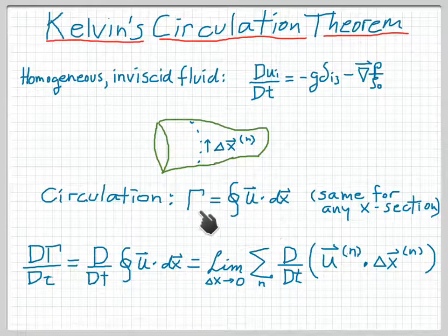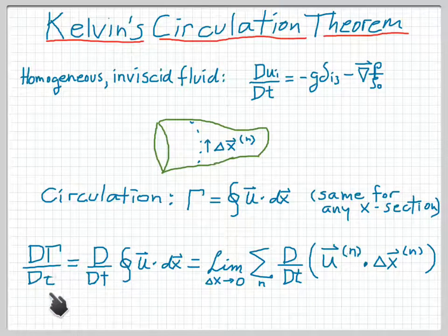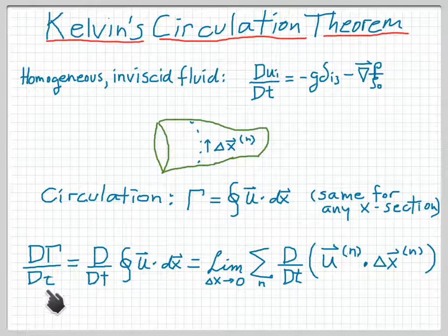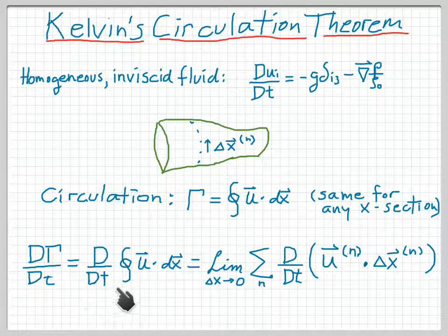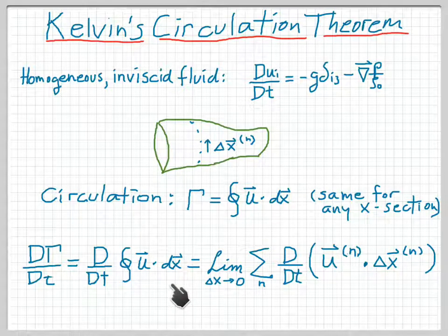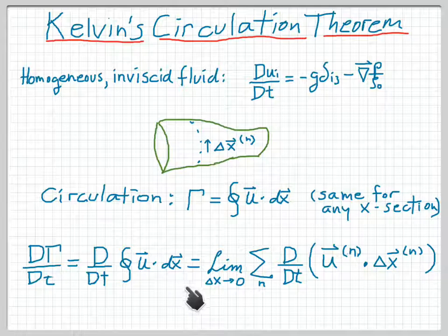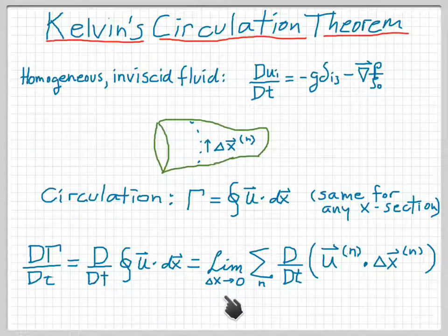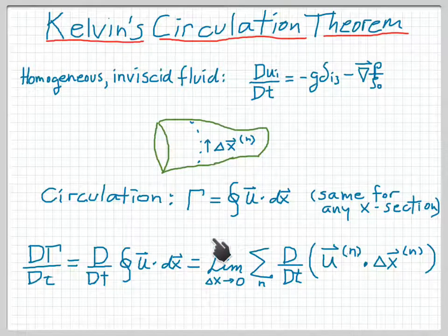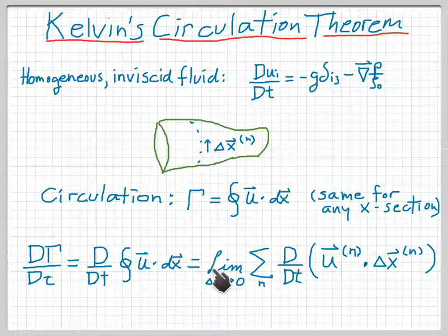and now we have to figure out how to differentiate it. So to get the material derivative, dΓ by dt, we have d by dt of this line integral. What we're going to do is write it, again using the definition of the integral, as a limit of little integrals between closely spaced points. So the limit as Δx goes to 0 of the sum over n of all of these points,